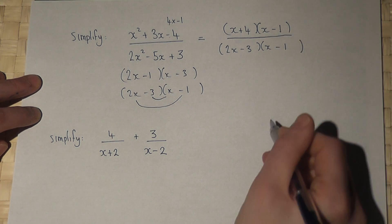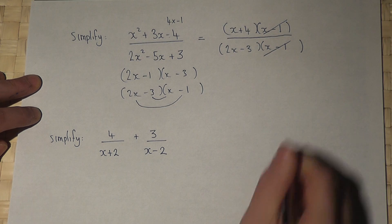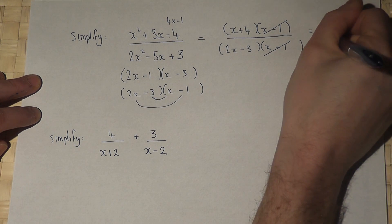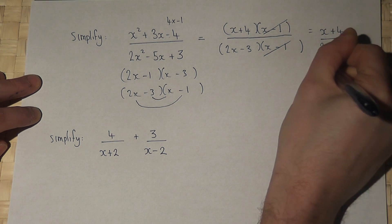They are now the same above and below. So I can then cancel off those two brackets. So the answer is x plus 4 all over 2x minus 3.